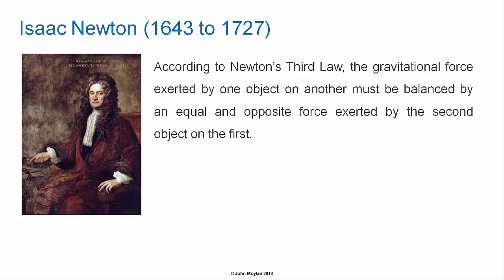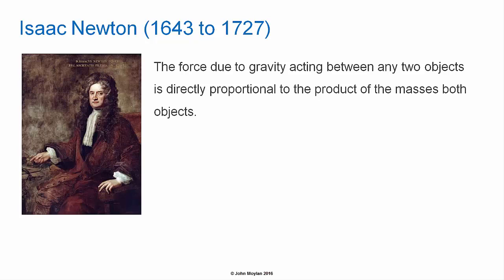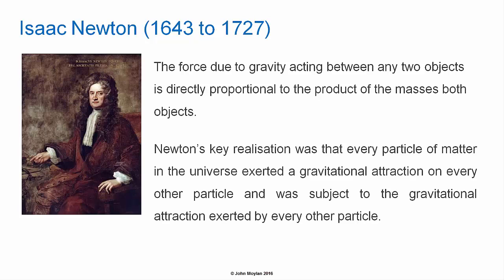According to Newton's third law, the gravitational force exerted by one object on another must be balanced by an equal and opposite force exerted by the second object on the first. So for every action there is an equal and opposite reaction; for every force there is an equal and opposite force. This is true of gravitation: the force due to gravity exerted by the Earth on an apple is equal to the force due to gravity exerted on the Earth by the apple. As both objects exert equal and opposite forces on each other, the force due to gravity must be directly proportional to the product of the masses of both objects.